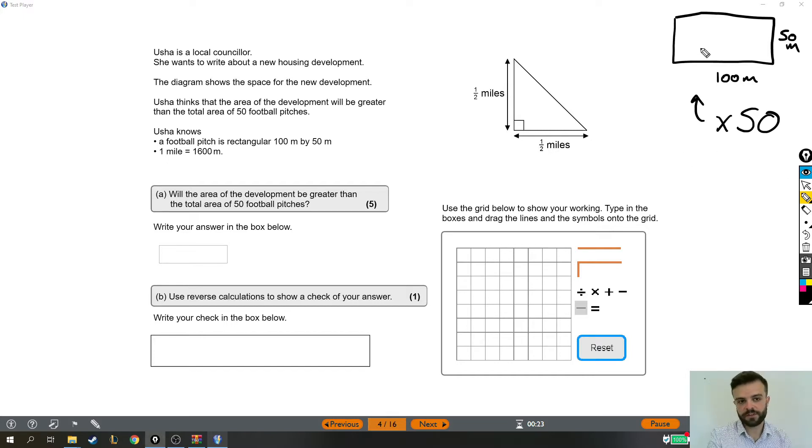We can find the area of a football pitch and then times it by 50. Actually, that's a really good place to start because even if we don't know how to do anything else, we can definitely find the area of 50 football pitches. It says right there in the question, so even if we don't know how to do the rest of the question, we can find the area of 50 football pitches.